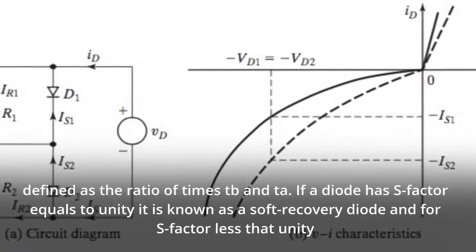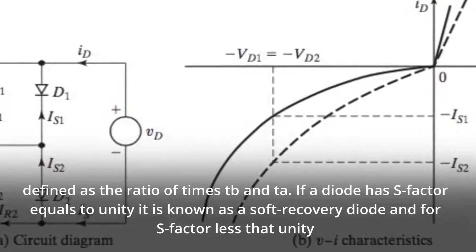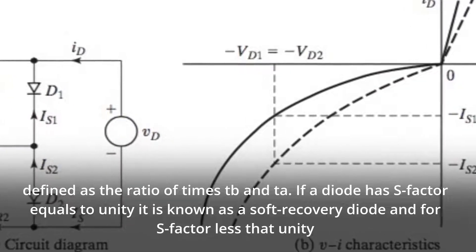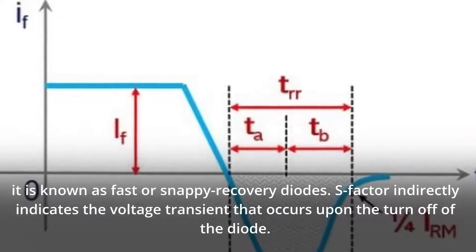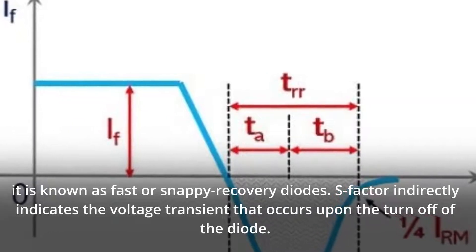If a diode has S-factor equals to unity it is known as a soft recovery diode and for S-factor less than unity it is known as fast or snappy recovery diodes. S-factor indirectly indicates the voltage transient that occurs upon the turnoff of the diode.